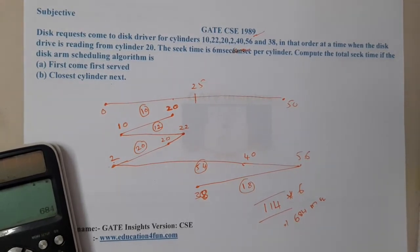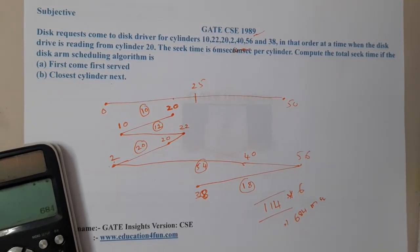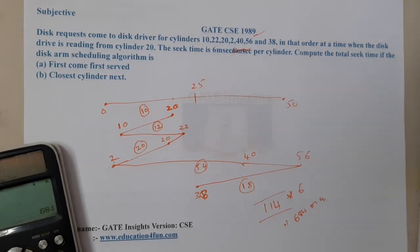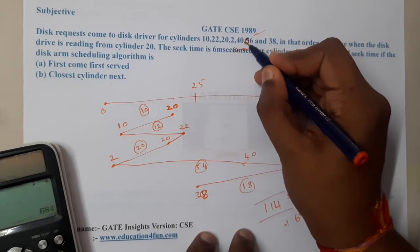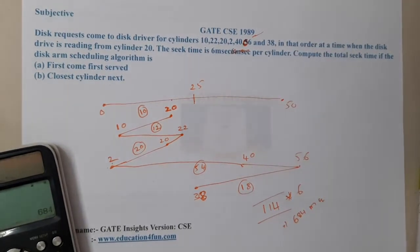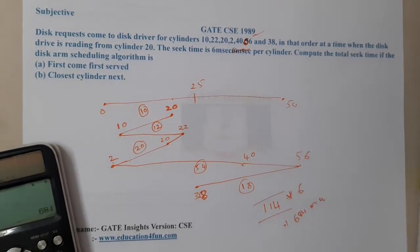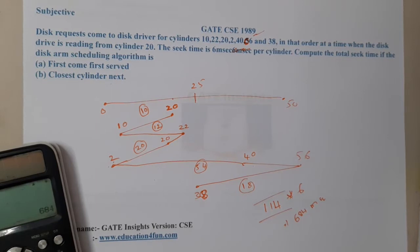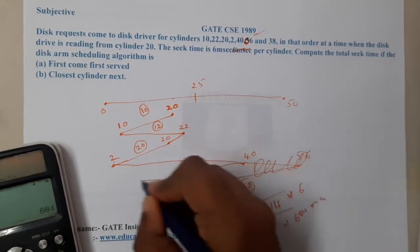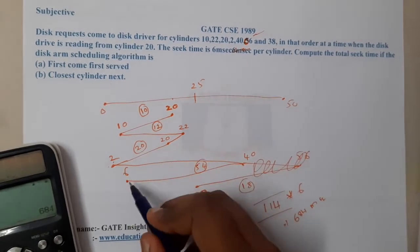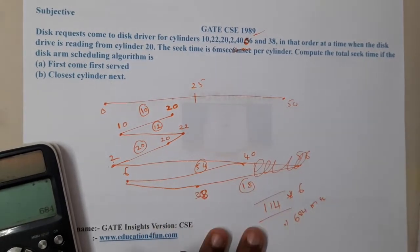I think there is a small printing mistake in this question because the answer is not matching. After pausing and checking, I noticed that it is not 56 but rather 06. So instead of going to 56, you will go back to 6, and from 6 you continue accordingly.